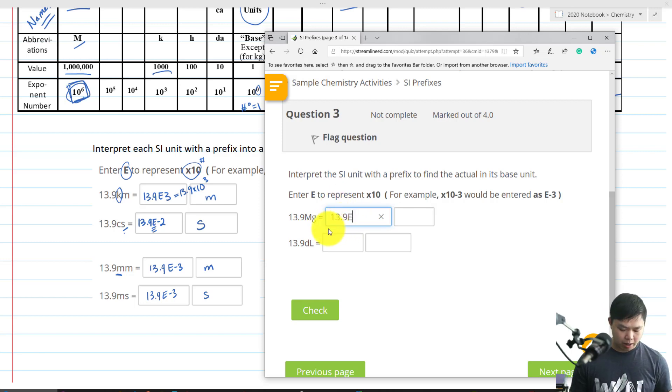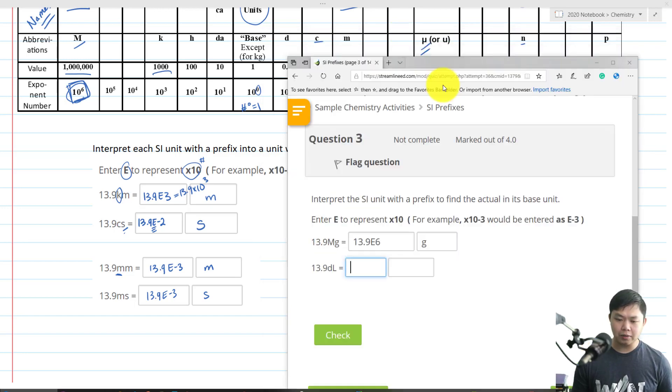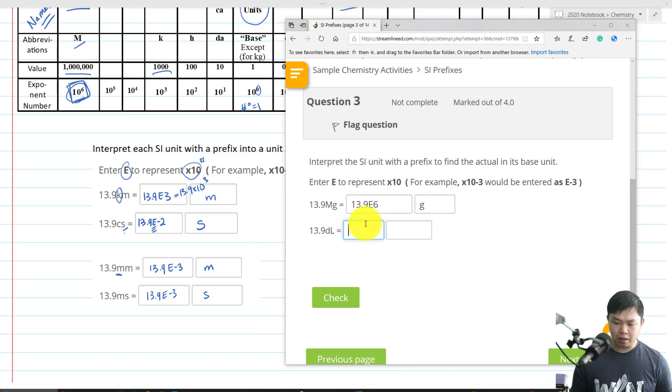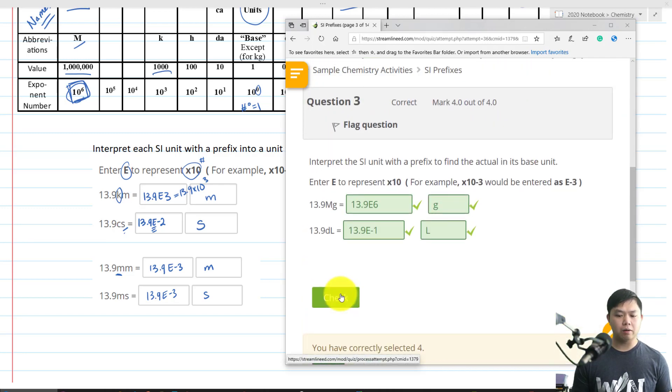So in this case, mega is 10 to the 6. So G is for grams. And D is for what? D is for Deci. Deci is 10 to the negative 1. So we have 13.9 E to negative 1. And that is liter right there. So we check our answer. And there you go.